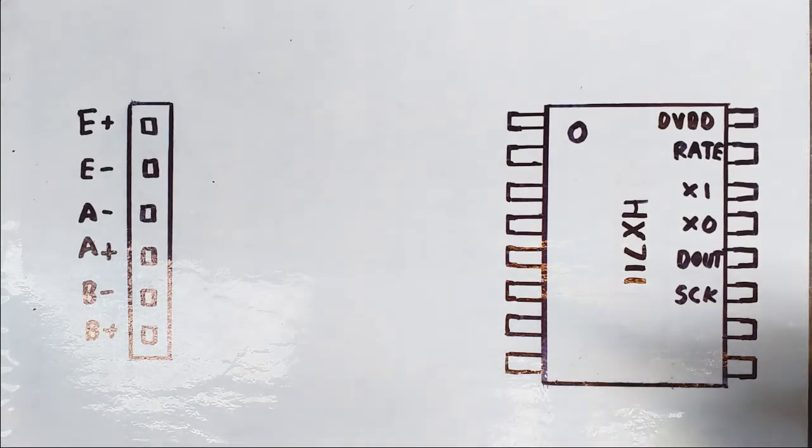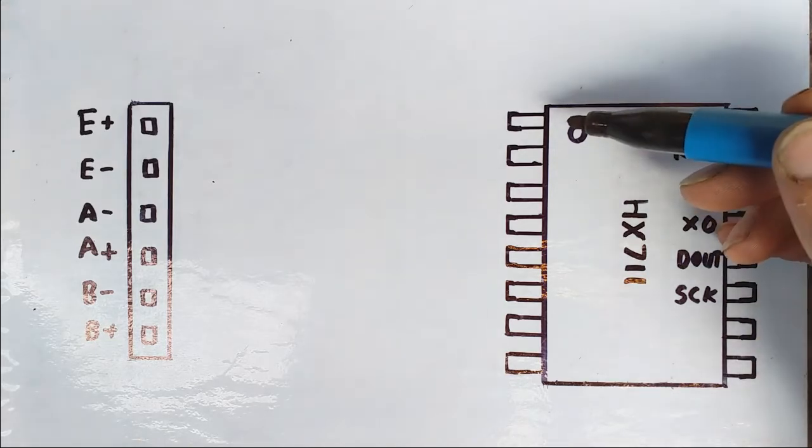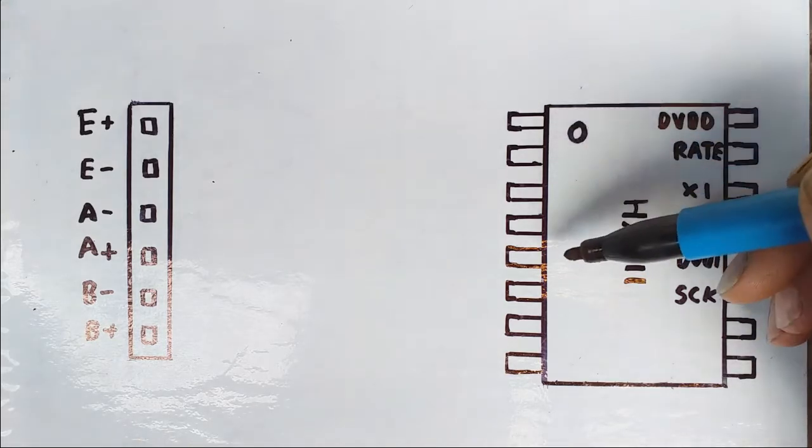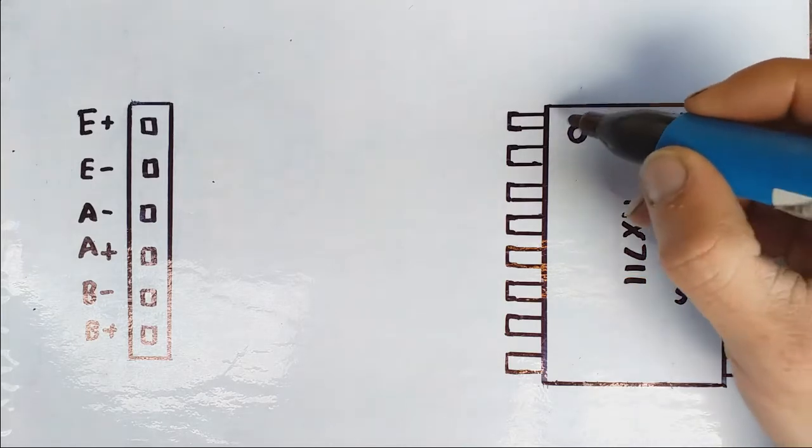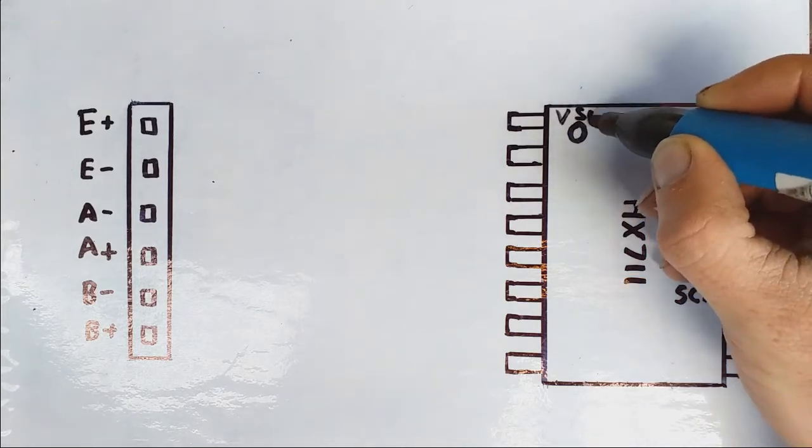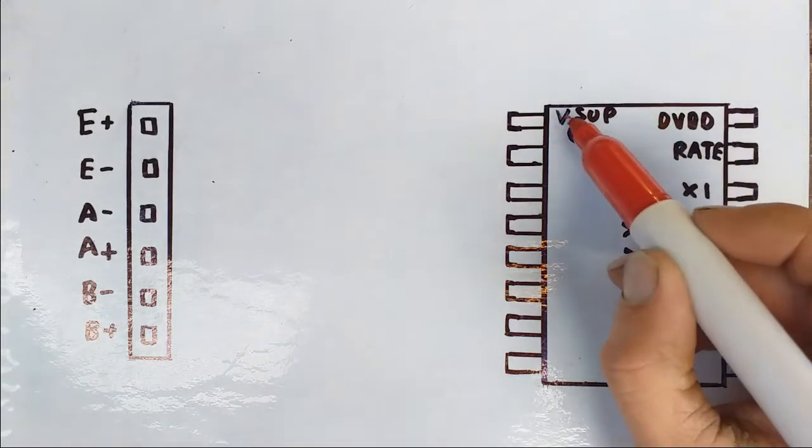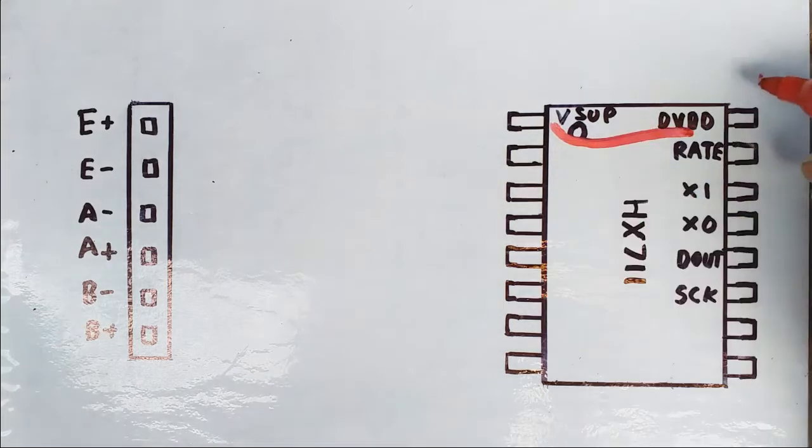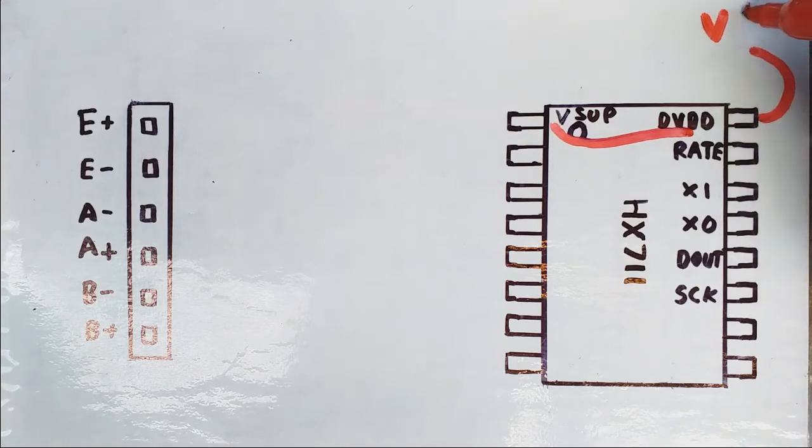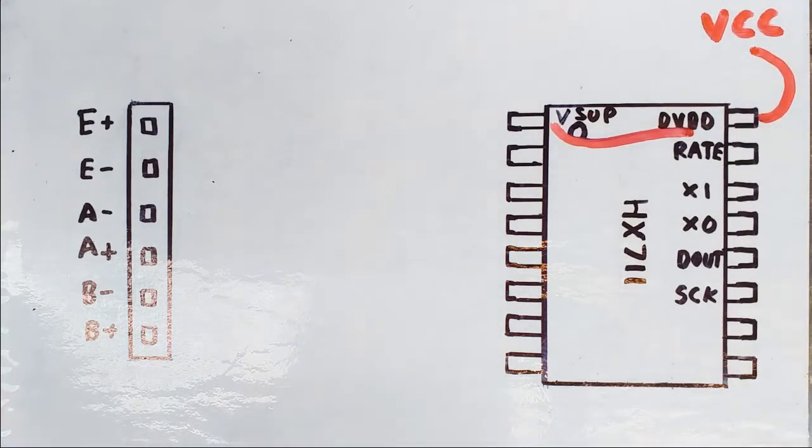The pins we're going to look at today that are used for this, the first one is the V supply which in this case on the board I'm using and in most cases is connected across to VCC. They call it DVDD but that goes to VCC so that will be your 5 volts or whatever you power the board with.